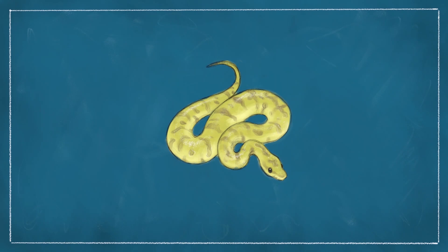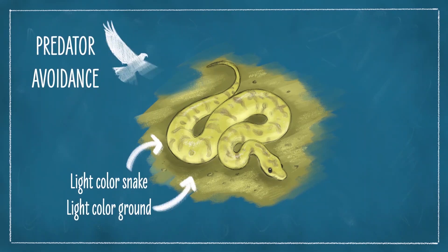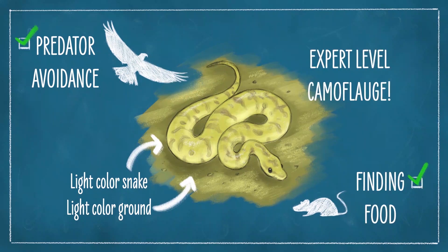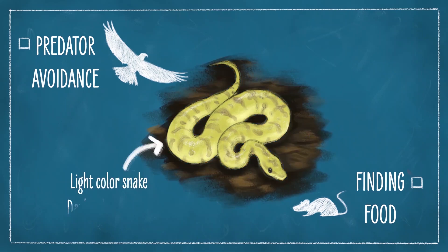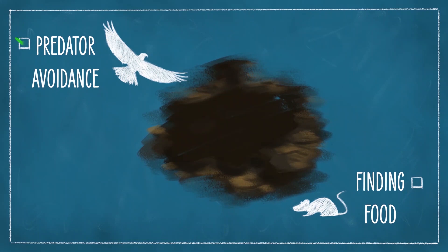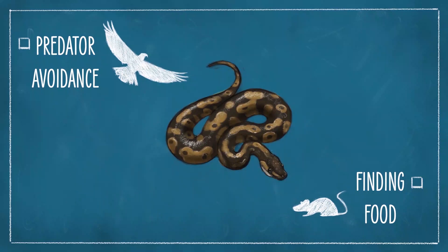Something about variation is that not all of it works as well in every environment. For example, our yellow ball python might do really well in a field of dry yellow grass or in a yellow sand desert — its yellow coloration might help it hide from both its predators and its prey. But it might not do so well if the ground happens to be dark brown. The opposite might be the case for our brown and black ball python: it might do great where the ground is dark brown, but not so well in the dry grass or the yellow sand.